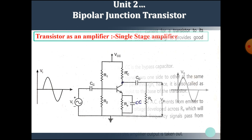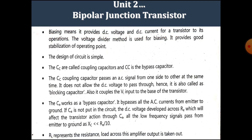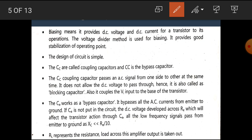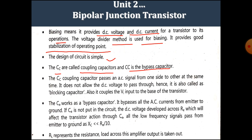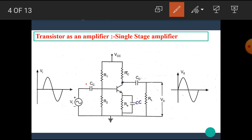Biasing means it provides a DC voltage and DC current for a transistor to its operation. The voltage divider method is used for biasing; it provides good stabilization of the operating point. The design of the circuit is very simple. CC is called as coupling capacitor and CE is the bypass capacitor. In this diagram, the two capacitors CC are known as the coupling capacitors and CE, the emitter capacitor, is known as the bypass capacitor and it bypasses the AC components.